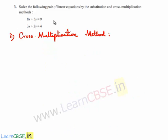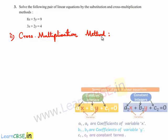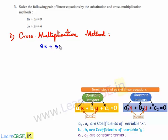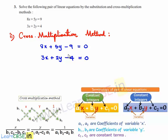Now let us find the solution by the cross multiplication method. The given equations can be written as 8x plus 5y minus 9 is equal to 0, and 3x plus 2y minus 4 is equal to 0. In order to find the solutions by cross multiplication method we need to draw a diagram.